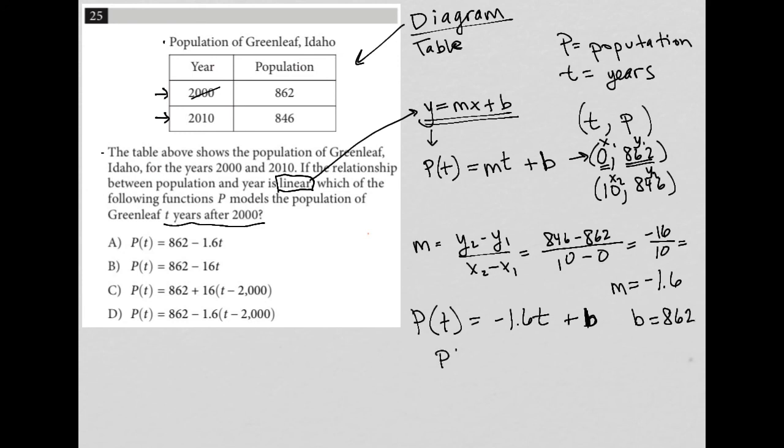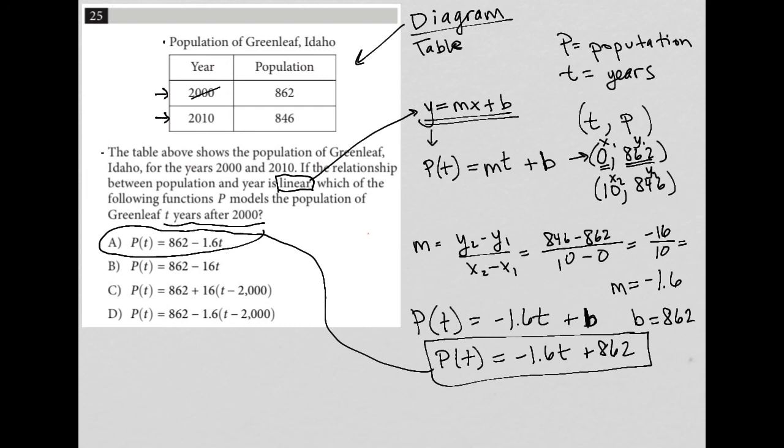So again, now I have P of t equals negative 1.6t plus 862. And that's my equation. So which of the answer choices matches that? It looks like we have the 862 out in front, but otherwise, this is answer choice A. We just have the reverse. So 862 is what we have. And then negative 1.6t is also what we have. None of the other answer choices have that. So A is the best answer here.